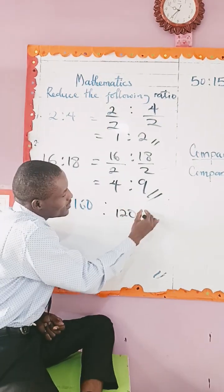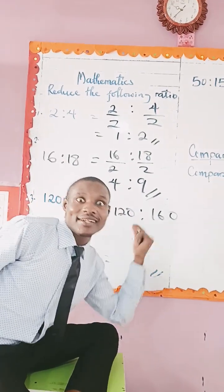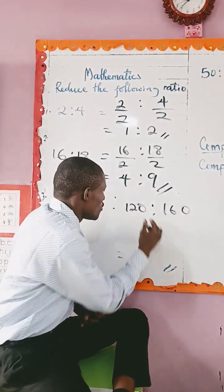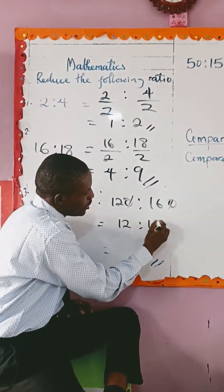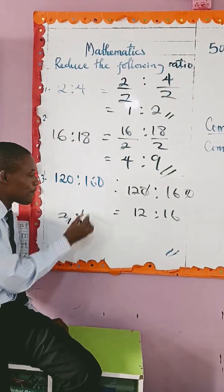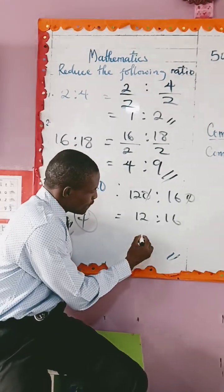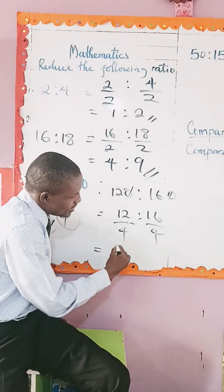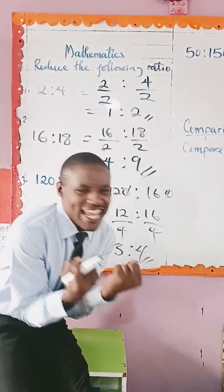Now we have 120 ratio 160. Cancel out the zeros — this ratio this. So what's the common factor? We have two and four, and we are picking four. So divide both by four. What's our final answer? Three ratio four. Super easy.